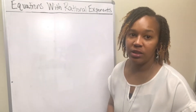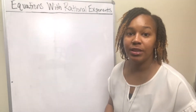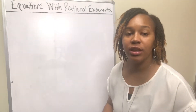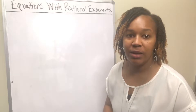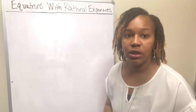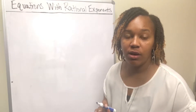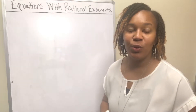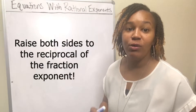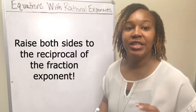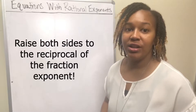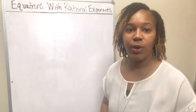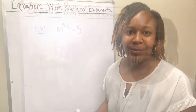Equations with Rational Exponents — that's basically an equation that has an exponent that's a fraction. In order to get rid of an exponent that's a fraction, you want to raise both sides to the reciprocal of that fraction. That's how you solve equations with rational exponents. Let's look at an example.